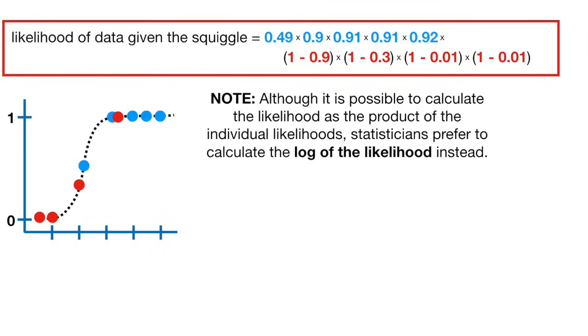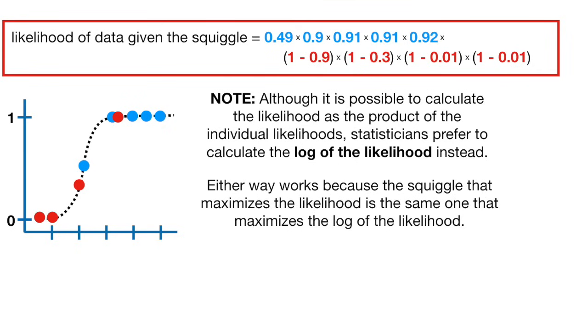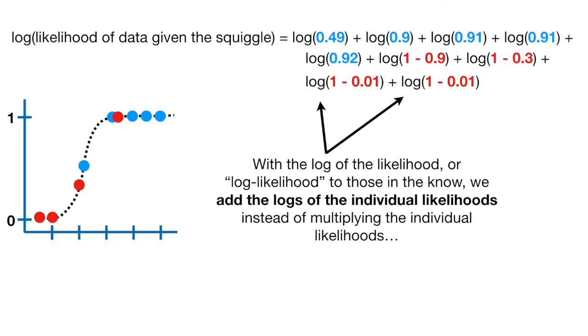Note, although it is possible to calculate the likelihood as the product of the individual likelihoods, statisticians prefer to calculate the log of the likelihood instead. Either way works, because the squiggle that maximizes the likelihood is the same one that maximizes the log of the likelihood. With the log of the likelihood, or log likelihood to those in the know, we add the logs of the individual likelihoods instead of multiplying the individual likelihoods.